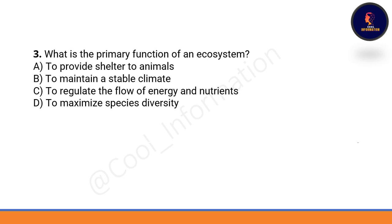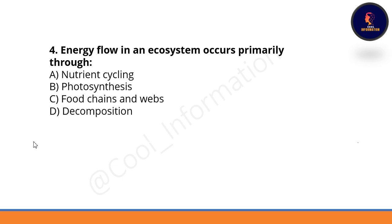What is the primary function of an ecosystem? The primary function of an ecosystem is to regulate the flow of energy and nutrients. Option C is correct.